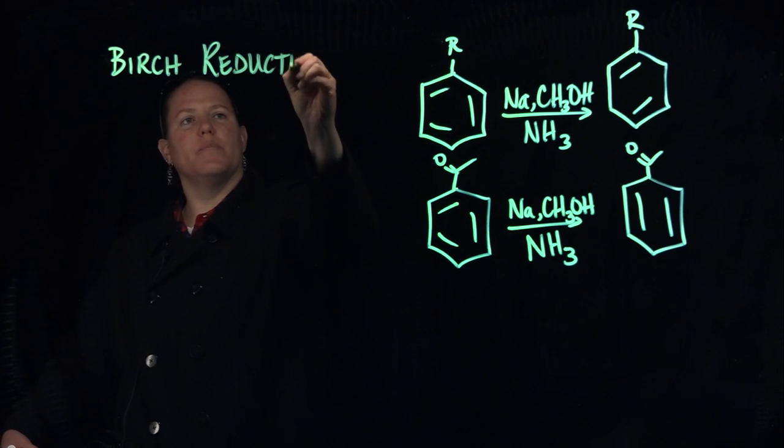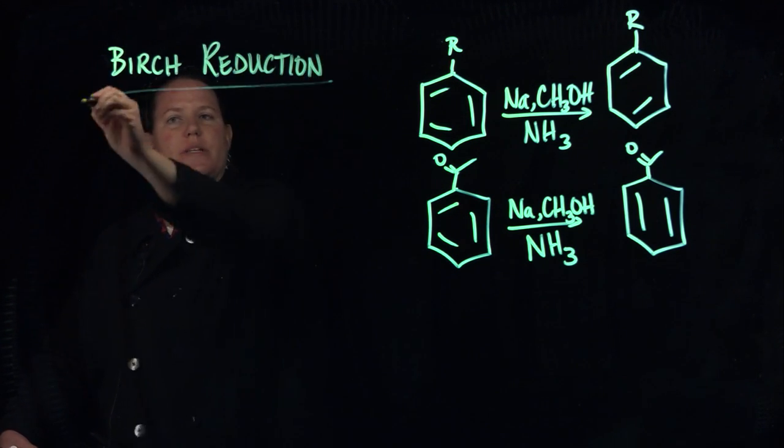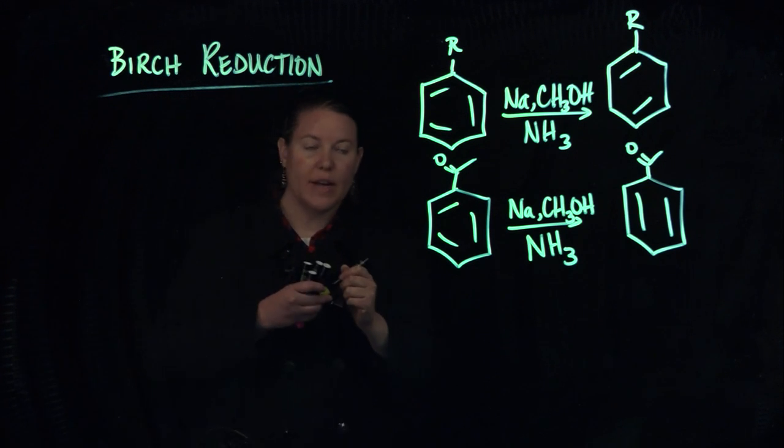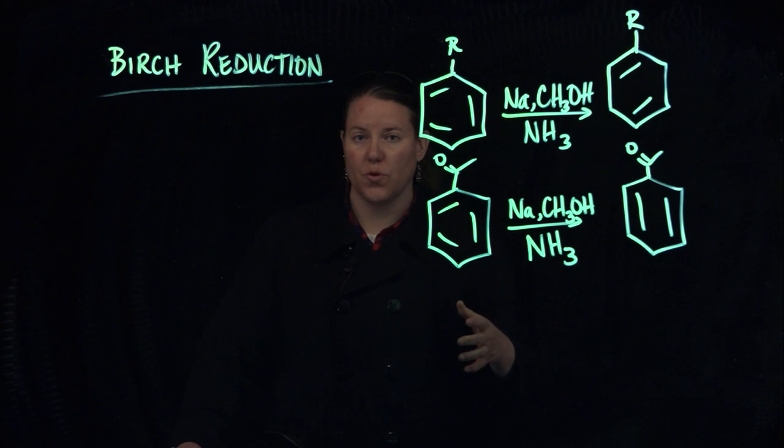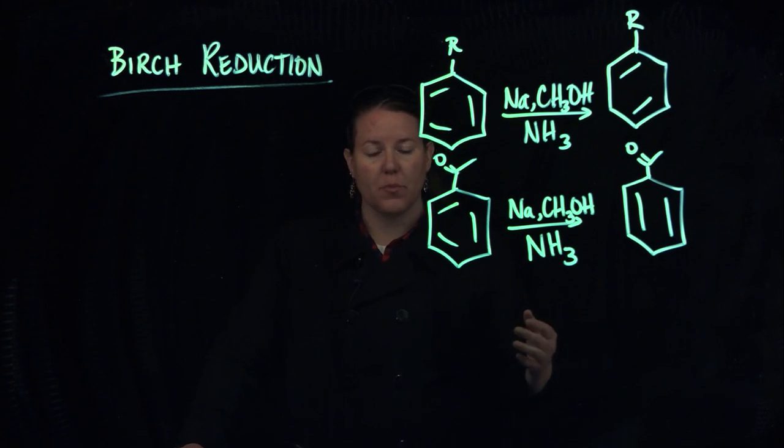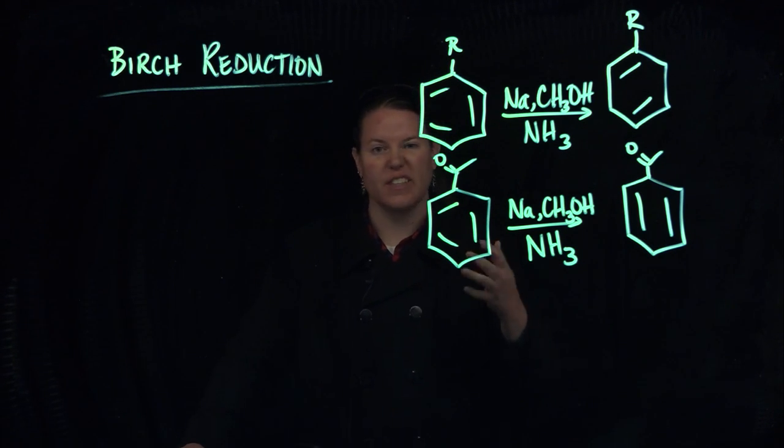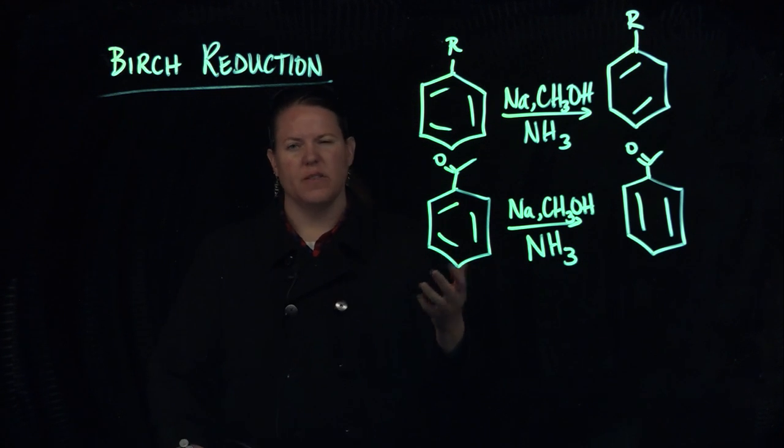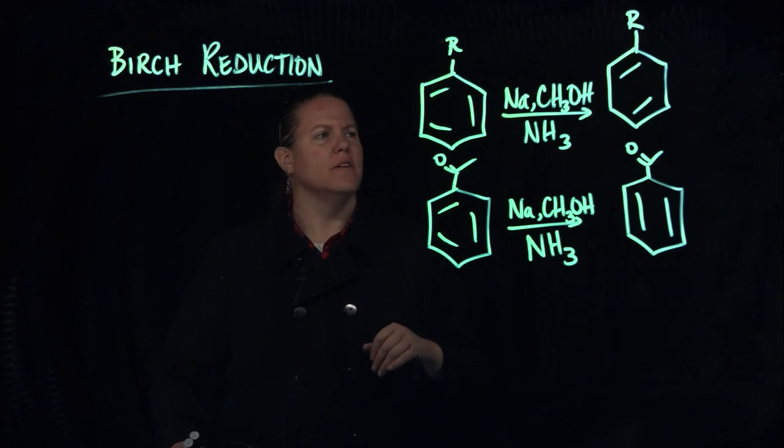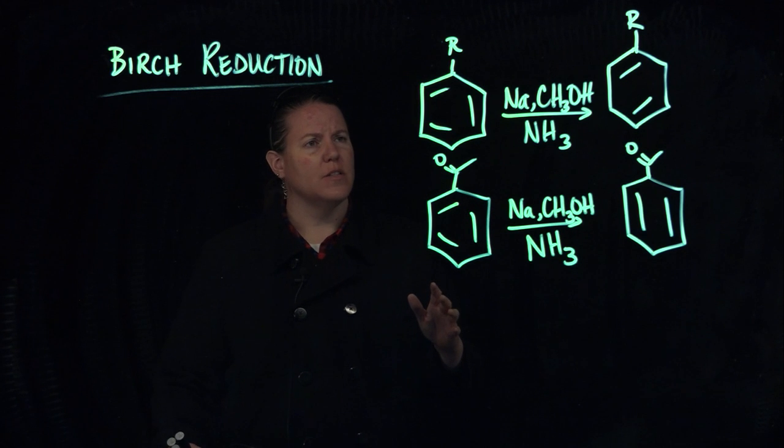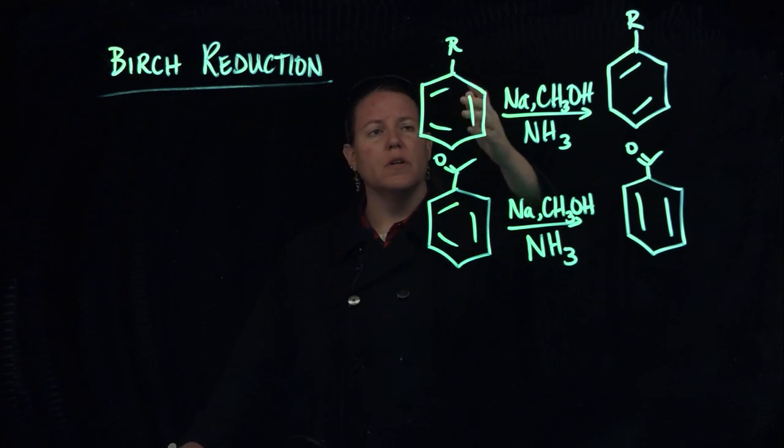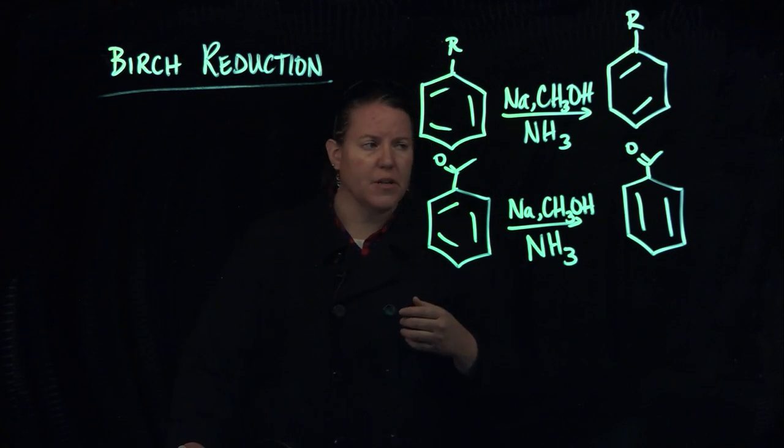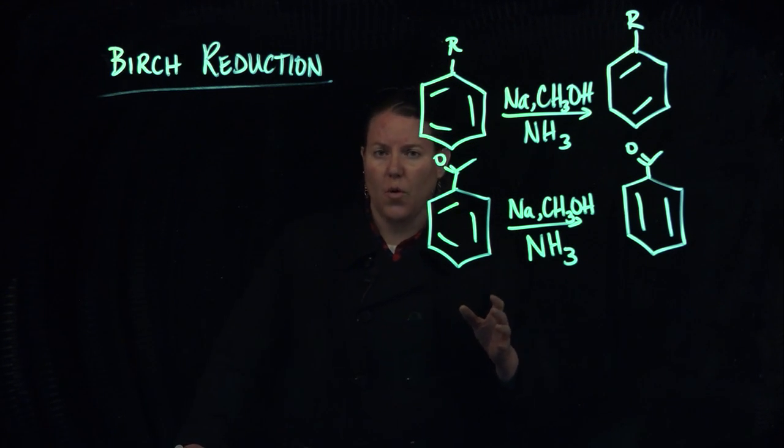Now why do we like the Birch reduction of a benzene ring? The reason why we like it so much is because it has a controlled reduction so we add more H's to C's, or something that has usually C's. Let's just say C's. More H's to C's. So in other words we have eliminated or reduced some of the double bonds within the benzene ring. It provides a great deal of control.